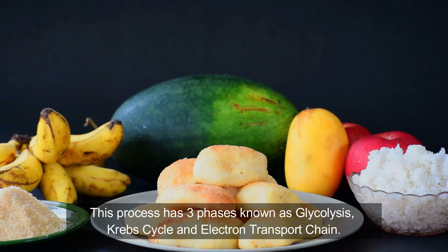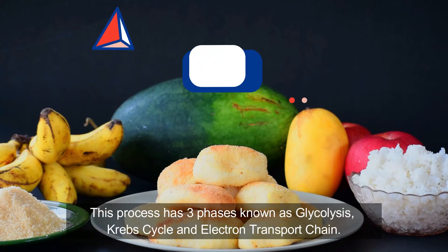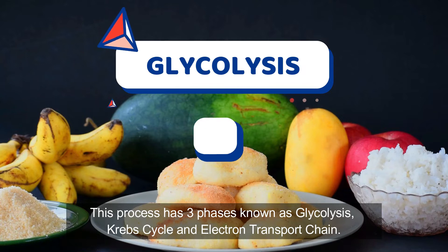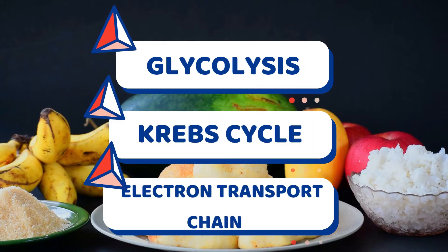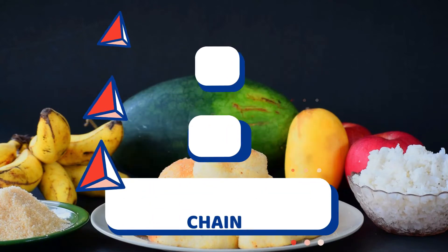This process has three phases known as glycolysis, Krebs cycle, and electron transport chain.